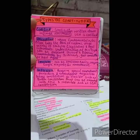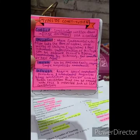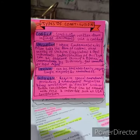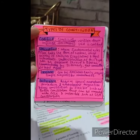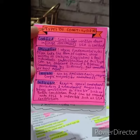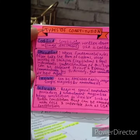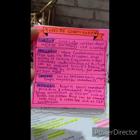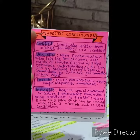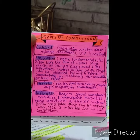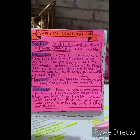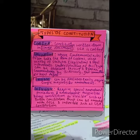Do you guys even know about types of constitution? So let's talk about types of constitution today. We have four types basically — we have more types of the constitution, but right now we are going to discuss these four: codified constitution, uncodified constitution, flexible constitution, and inflexible constitution.